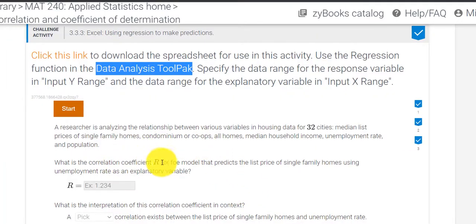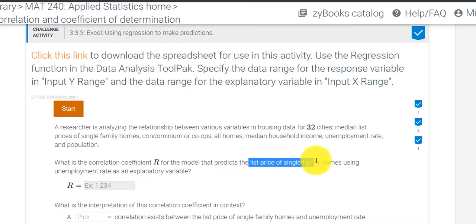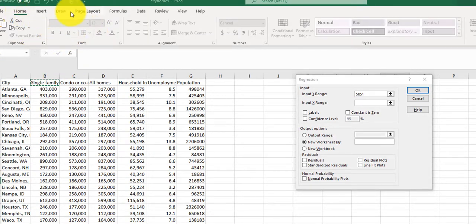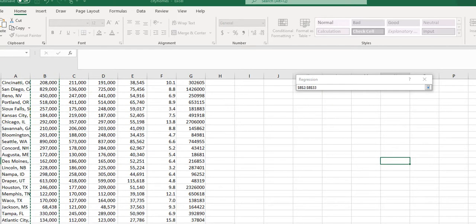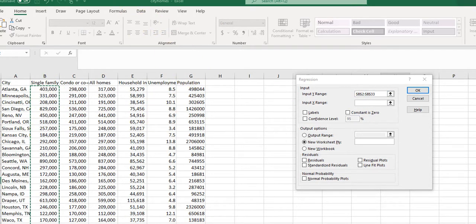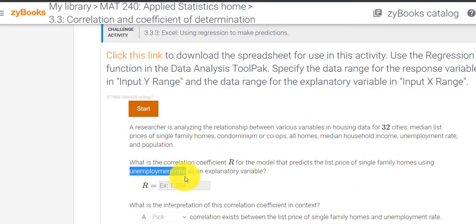So I go back to the problem and it says correlation coefficient for a model that predicts the list price. So the response variable is list price for single family homes. Now these words might change. This problem is designed to change every time the student opens it. So you always have a different problem. So just look, if you have a different heading here, just look for the heading that you have. So list price of single family homes. I'm going to just highlight that. It's not letting me because I have the window open. No problem. So I'm going to click on single family homes. This is the list price and scroll down.